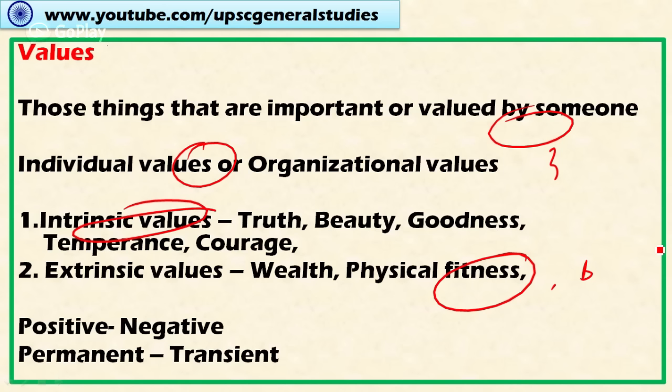However, we cannot divide values into rigid intrinsic and extrinsic classifications. For some persons, securing wealth may be an intrinsic value; for others it may be a means to an end — for example, wealth may be distributed for the benefit of the poor. Values may also be positive or negative, permanent or transient. What is certain is that values significantly decide and influence the behavior of a person.